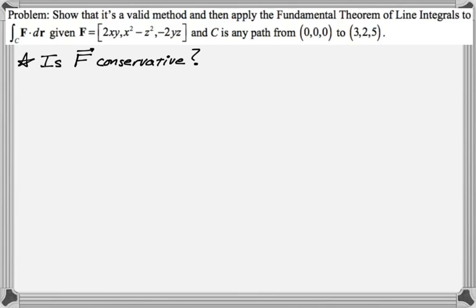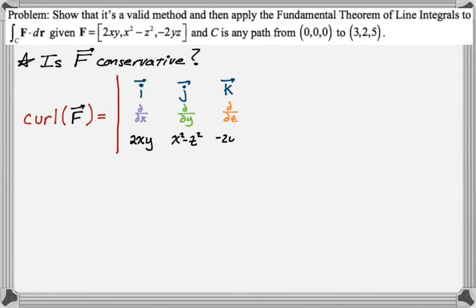To do that, I like to calculate the curl, which is a really convenient way of remembering how to do these things. It's going to be a cross product. First row is i, j, and k. Second row is the partial derivatives: partial x, partial y, and partial z. And then the third row is our vector field: 2xy, x squared minus z squared, and negative 2yz.